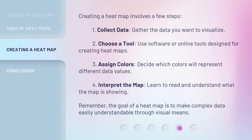Creating a heatmap involves a few steps. First, collect data: gather the data you want to visualize. Second, choose a tool: use software or online tools designed for creating heatmaps. Third, assign colors: decide which colors will represent different data values. Fourth, interpret the map: learn to read and understand what the map is showing. Remember, the goal of a heatmap is to make complex data easily understandable through visual means.